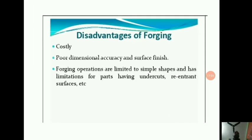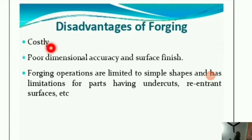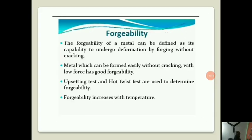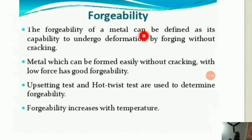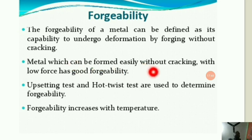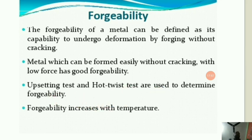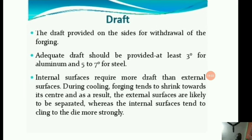The disadvantages of forging: it is a somewhat costly operation, and dimensional accuracy and surface finish are not very high. It is also limited to simple shapes and has limitations for parts having undercuts or re-entrant surfaces. Forgeability of a metal can be defined as its capability to undergo deformation by forging without cracking. Metal which can be formed easily without cracking with low force has good forgeability. Upsetting tests and hot-pitch tests are used to determine forgeability. Forgeability increases with temperature.